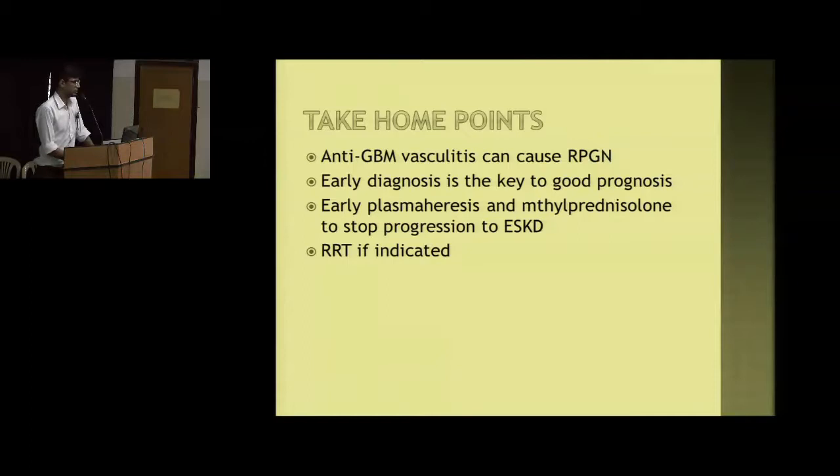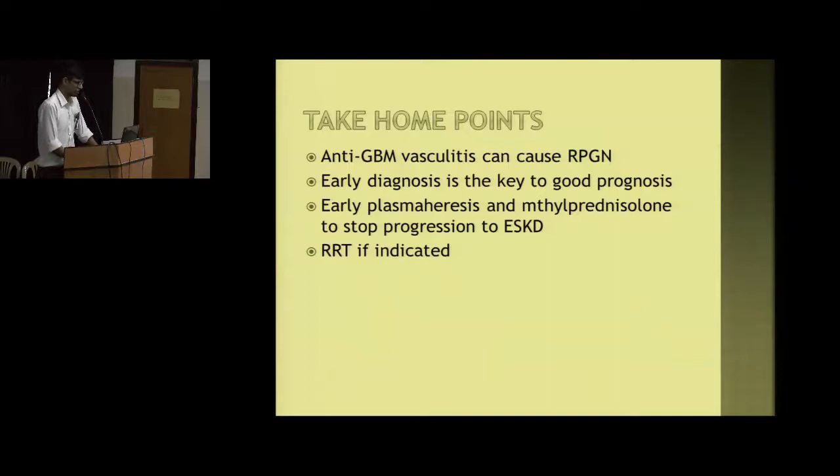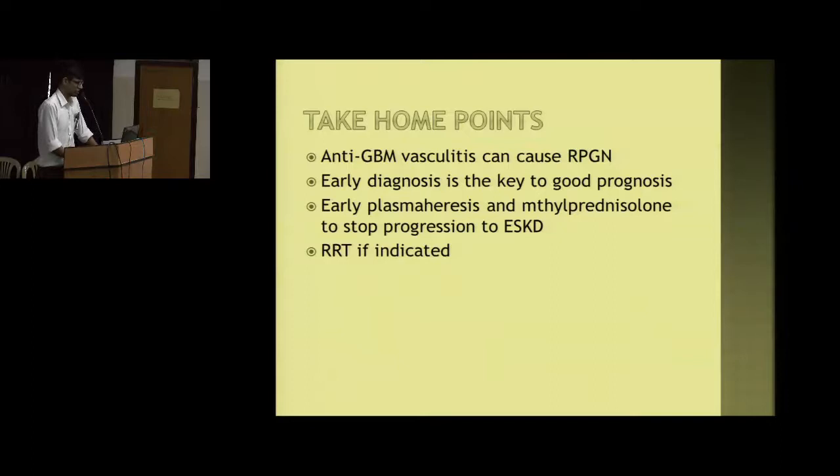Take-home messages: anti-GBM disease can cause RPGN, and the key to good prognosis is early diagnosis. The combination of plasma exchange and corticosteroid therapy is the best treatment. If there is progression to end-stage renal disease with no improvement, renal replacement therapy should be considered. This patient did not receive plasma exchange due to financial constraints.